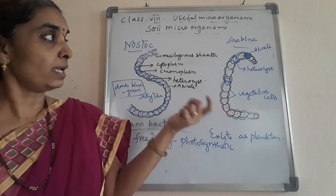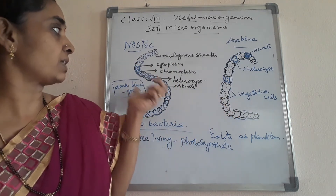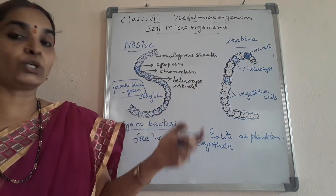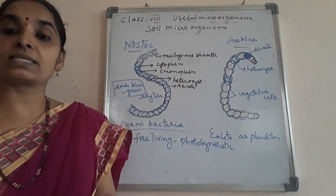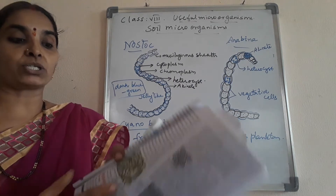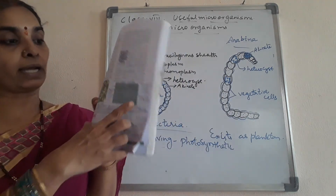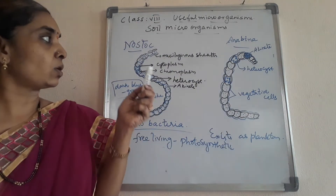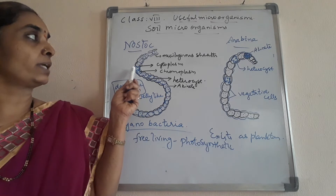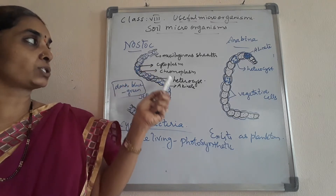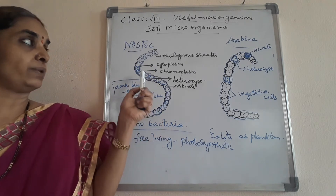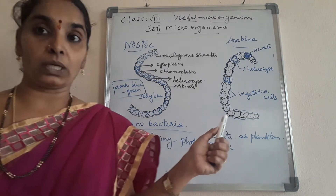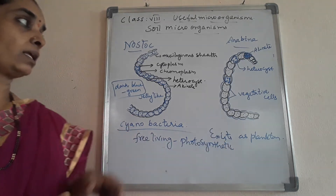You can draw the pictures of Nostoc and Anabaena, which supply atmospheric nitrogen to plants. The structure of Nostoc and Anabaena is given in your textbook. Nostoc is found both in aquatic environments and in the soil — they live in water and also on land.